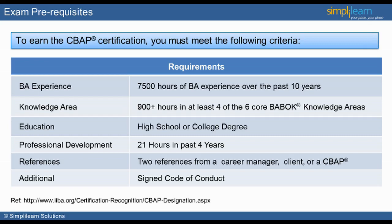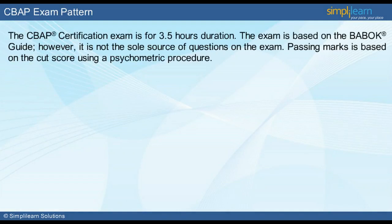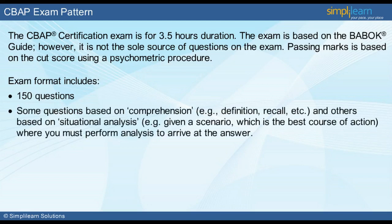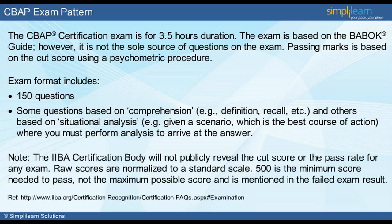The duration of the certification exam is three and a half hours. Although the exam questions are majorly based on the BABOK guide, it is not the only source. The marks required to qualify is based on a cut score which is determined with the aid of a psychometric procedure. The exam pattern will include 150 questions. Some questions, for example definition and recall, are based on comprehension. Other questions, such as given a scenario which is the best course of action, are based on situational analysis, requiring analysis to arrive at the answer. The IIBA certification body will not publicly reveal the cut score or the pass rate for any exam. All scores are normalized to a standard scale, with 500 being the minimum score needed to pass.